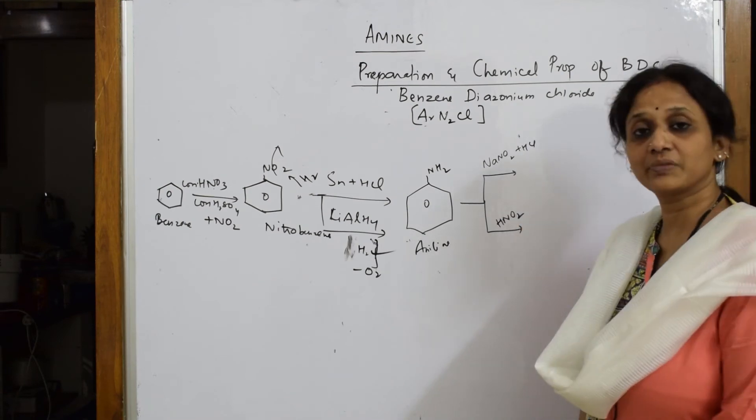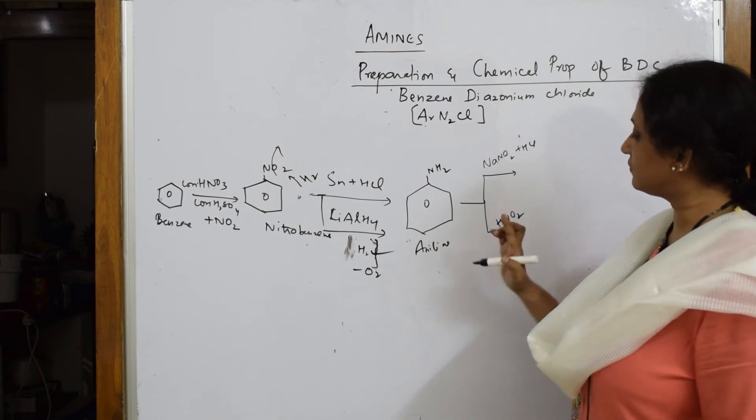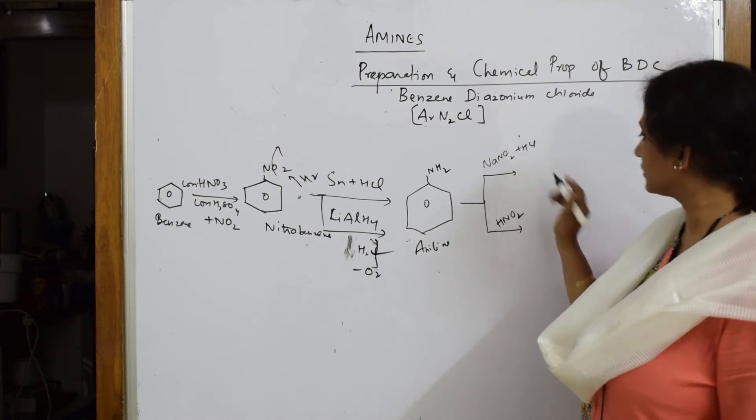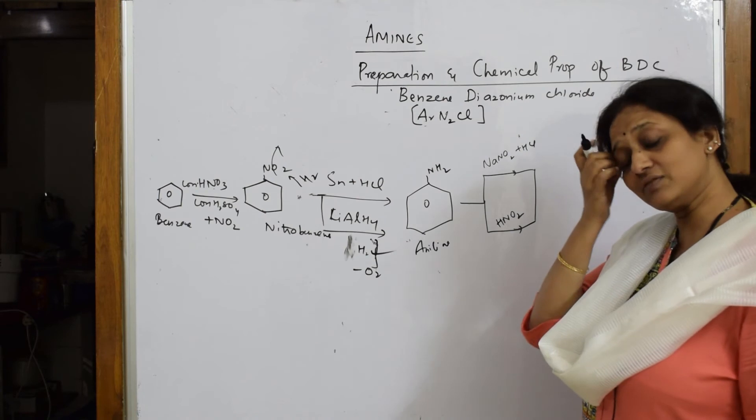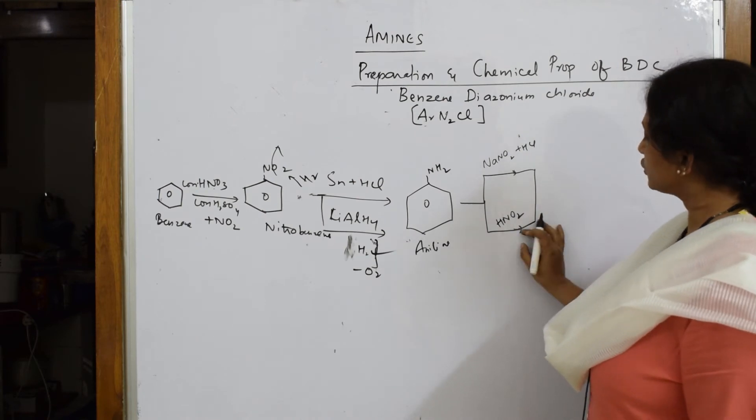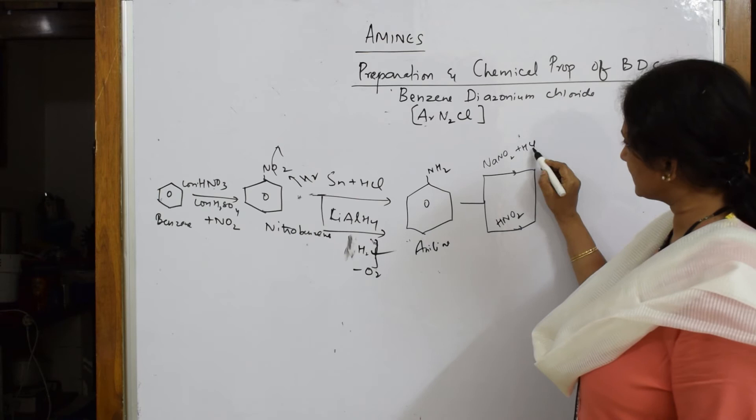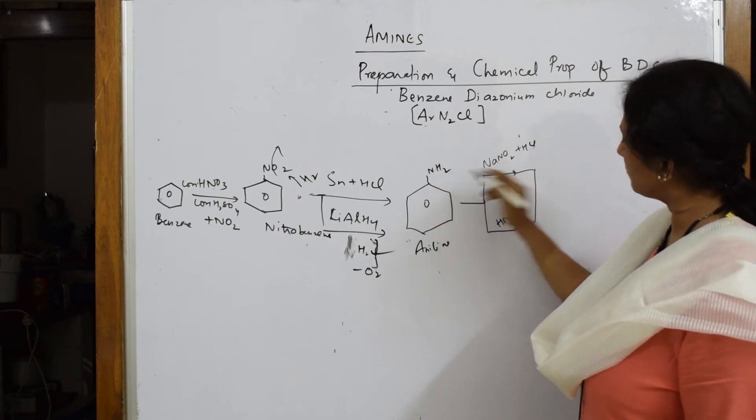Both will convert aniline to BDC. Both the compounds - NaNO2 and HCl - will convert your aniline to your BDC. So what's going to form? The HCl. Now this whole compound is going to get converted to a new compound called N2Cl.